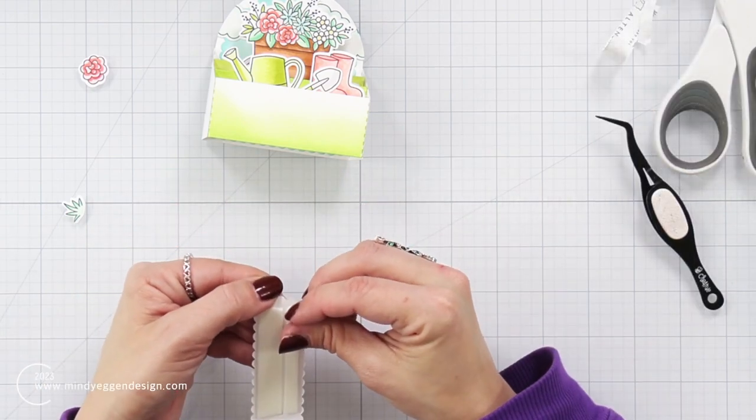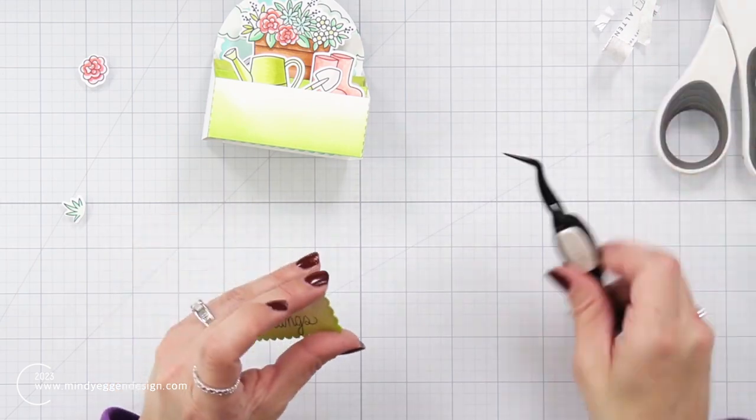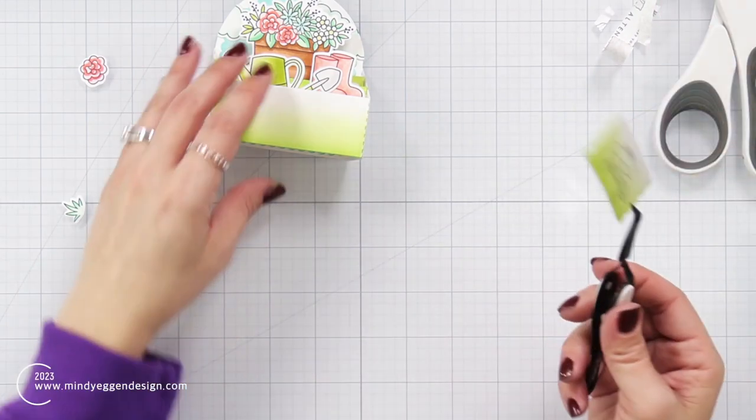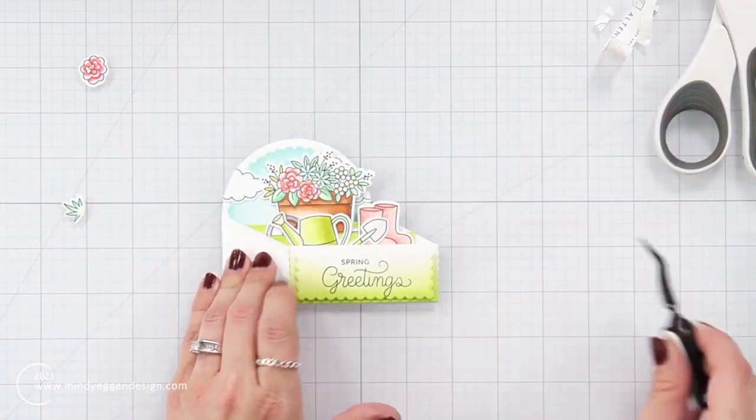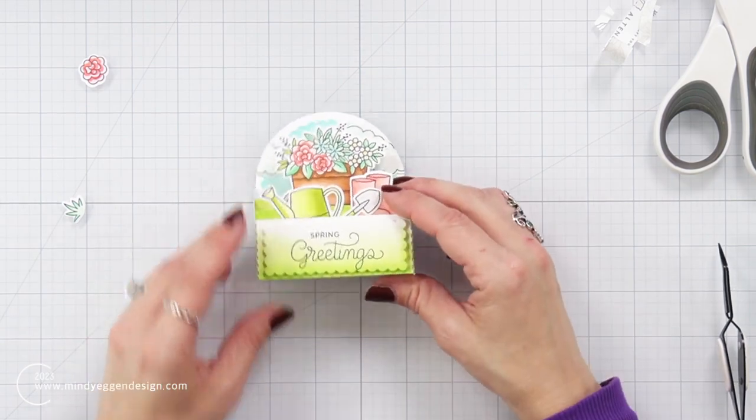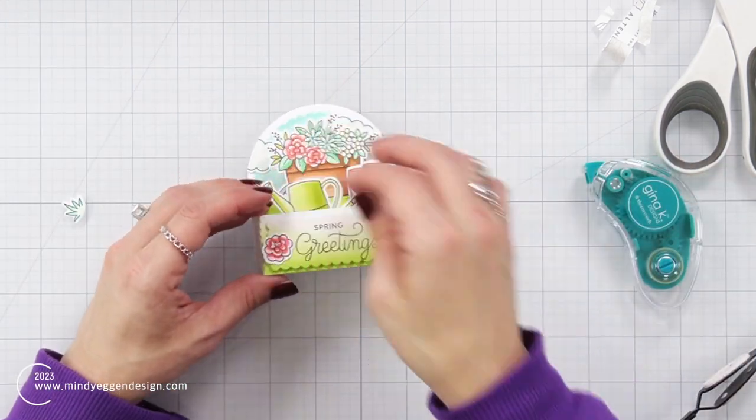Now, for the sentiment, I added some foam tape behind that and I'm going to place this on the front of the card. Now, you can flatten your card, which would make it a little easier to add that sentiment to.